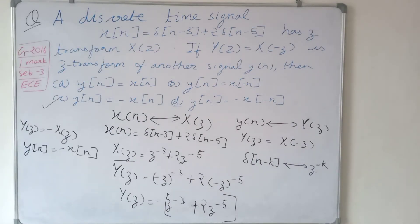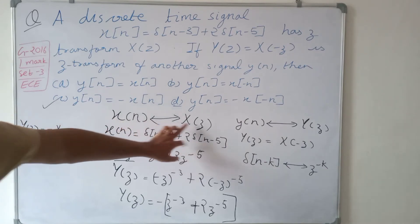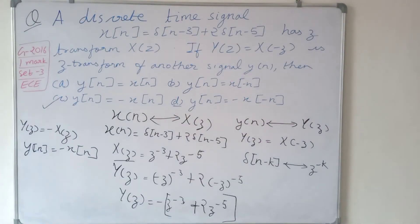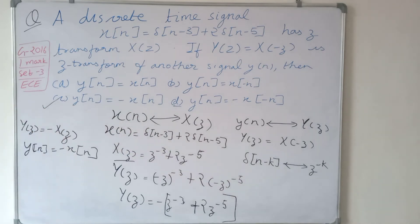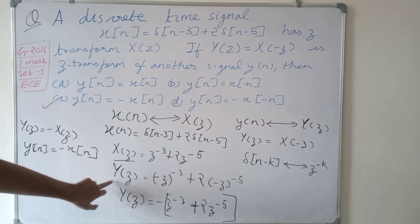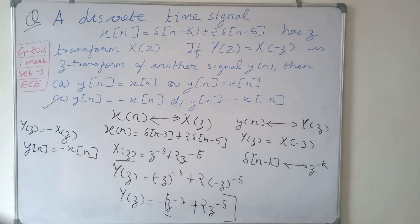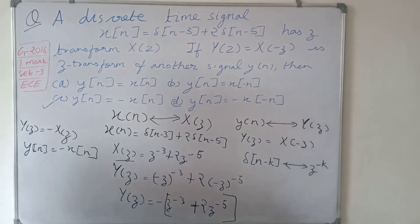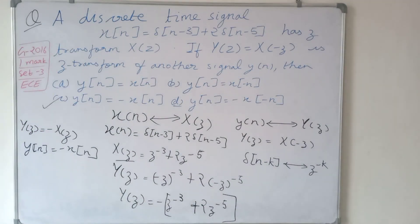This is a straightforward question. We were given the relationship between Z-transforms Y of z and X of z, where x of n and y of n are two discrete time signals. We found the Z-transform of x, then found Y of z by substituting z equal to minus z in X of z. Option C is the correct answer. Please like, share, and subscribe to the channel. If you have any doubts, comment in the comment box.